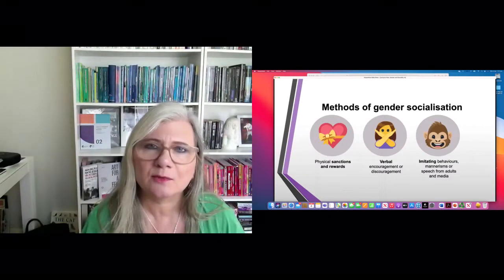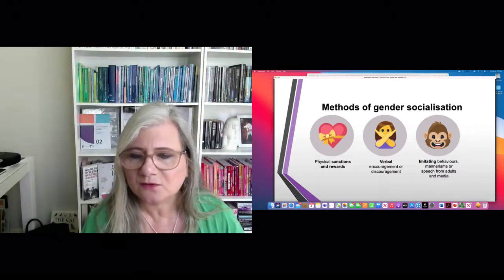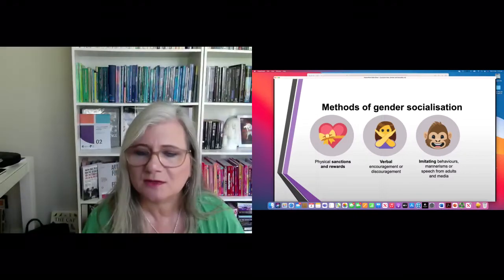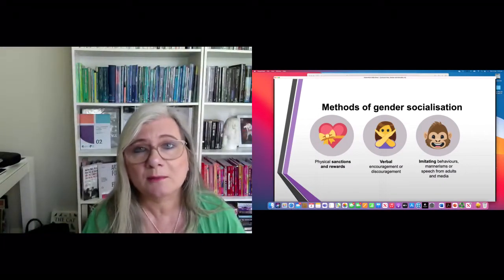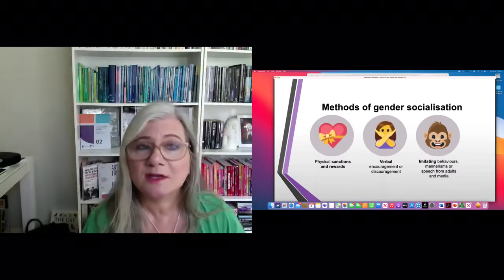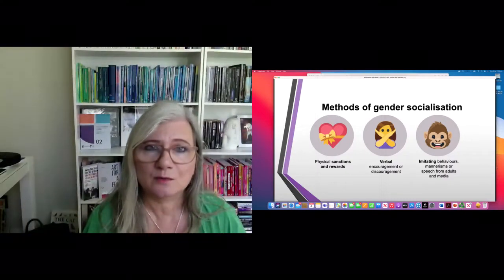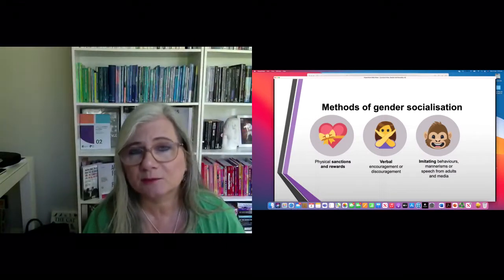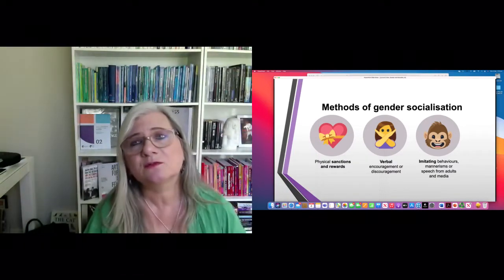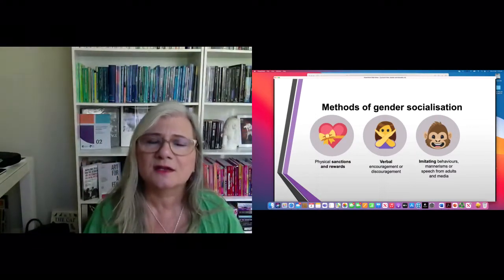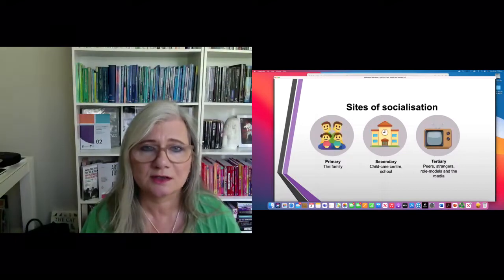How does socialization happen? Some of it can be quite subtle — for example, through imitating behaviors, mannerisms, or speech from adults in our lives or in the media. It can also be through verbal encouragement like 'good girl,' or discouragement like 'boys don't cry,' or through physical sanctions and rewards — where we're rewarded for acting in particular ways or punished if, say, a boy wants to play with Barbie dolls.